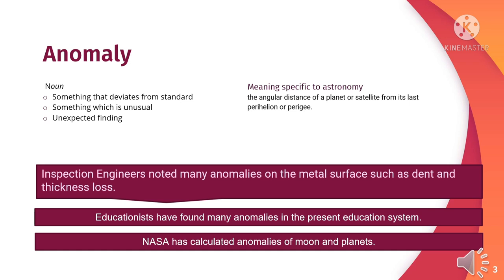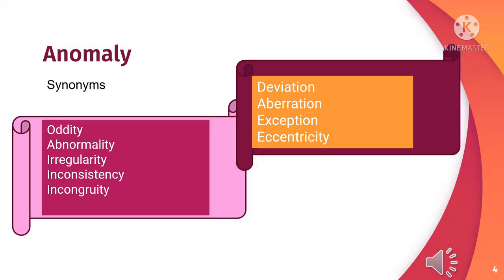Educationists have found many anomalies in the present education system. NASA has calculated anomalies of moon. Some of the synonyms of anomaly are: oddity, abnormality, irregularity, inconsistency, and incongruity. Some other synonyms are deviation, aberration, exception, and eccentricity.